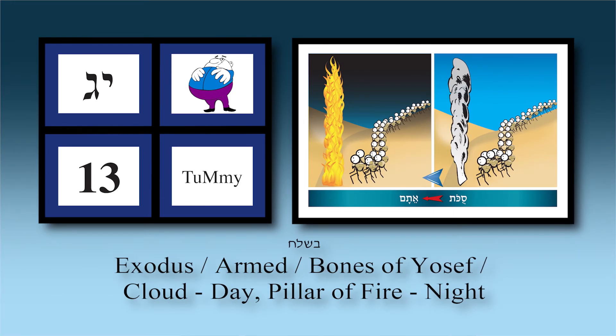Now we enter Parashat Beshalach. Parashat Beshalach continues Perek Yud-Gimel — the same simon 'Tami,' but a different story of association because the information is different.